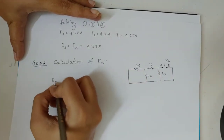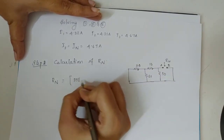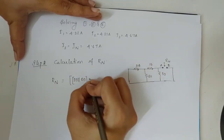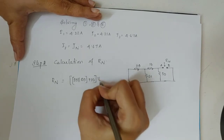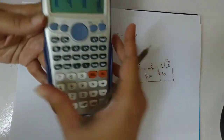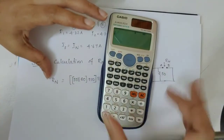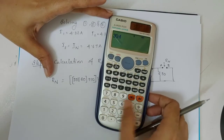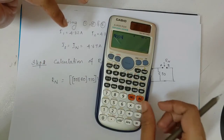Rn is calculated by finding the equivalent resistance seen from A and B. We have 30 ohms in parallel with 60 ohms: (30 × 60) divided by (30 + 60) equals 1800 divided by 90 equals 20 ohms. Then this is in series with 10 ohms, giving 30 ohms.